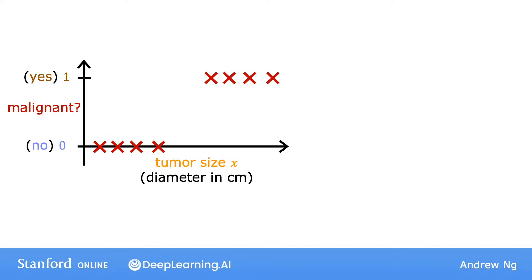You saw in the last video that linear regression is not a good algorithm for this problem. In contrast, what logistic regression will end up doing is fit a curve that looks like this, a sort of S-shaped curve to this data set.